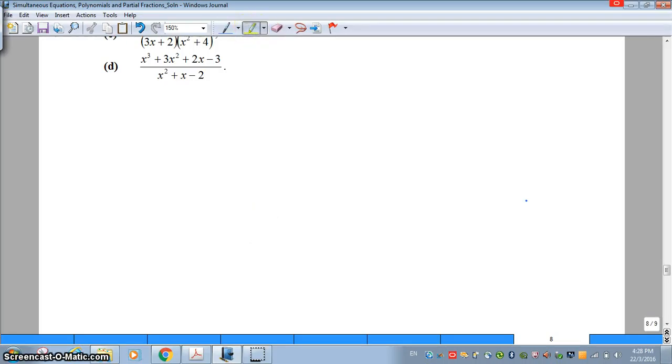Let us take a look at part D. What do you notice? What I saw was the degree of the numerator is 3. The degree of the denominator is 2. It does not satisfy the condition of having a proper fraction.